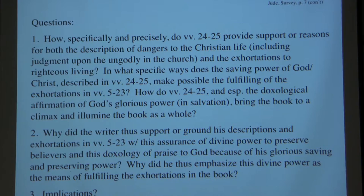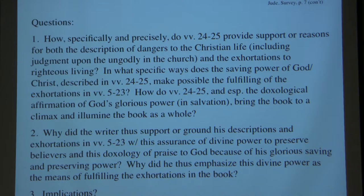How do verses 24 and 25, and especially the doxological affirmation of God's glorious power in salvation, bring the book to a climax and illumine the book as a whole? Rational questions: why did the writer ground his descriptions and exhortations in verses 5 through 23 with this assurance of divine power and this doxology of praise? Even though it's true, he didn't have to say it — why was it important for him to say it in this way, and why did he emphasize this divine power as the means of fulfilling the exhortation?